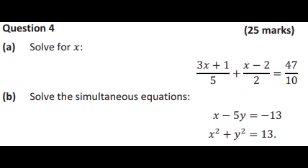This is question 4 from the 2019 Ordinary Level Leaving Certificate Paper. As you can see, it's split into two parts. They're both algebraic questions. The first is an algebraic question involving fractions, and the second is a simultaneous equations question with a second-order equation as one of them — or a circle and a line is another way to look at it. You can find a link to an image of this question in the description below.